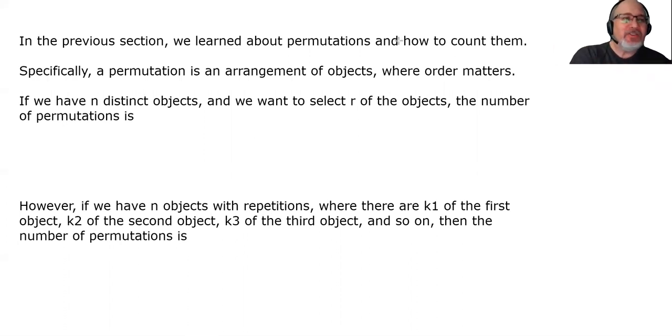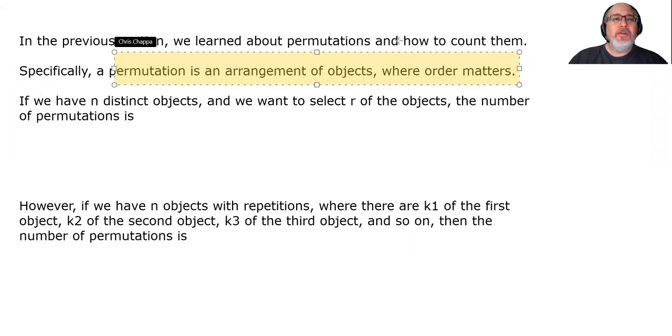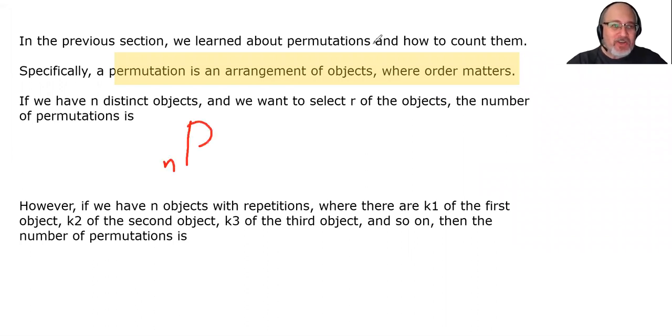If we have n distinct objects and we want to select r of the objects, the number of permutations is given by this formula. In other words, if we select some of them and the order matters in which we select them, then the formula is a ratio of factorials. The numerator is the total number of objects factorial, but the denominator is the difference between the total and the number we're selecting, factorial.